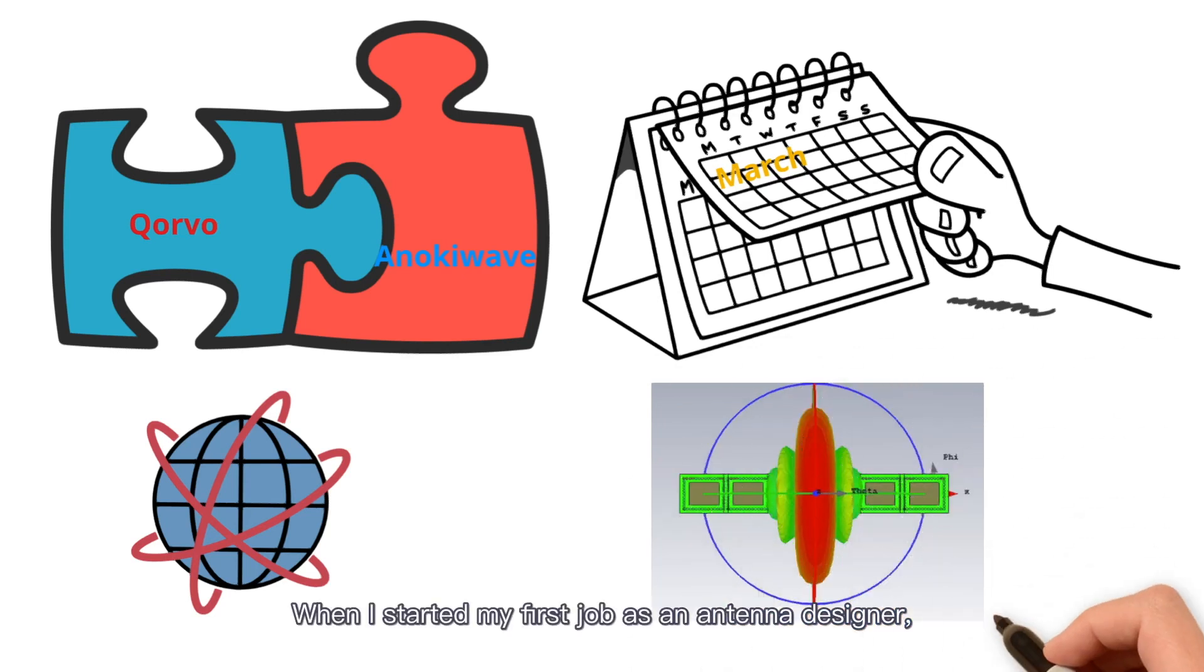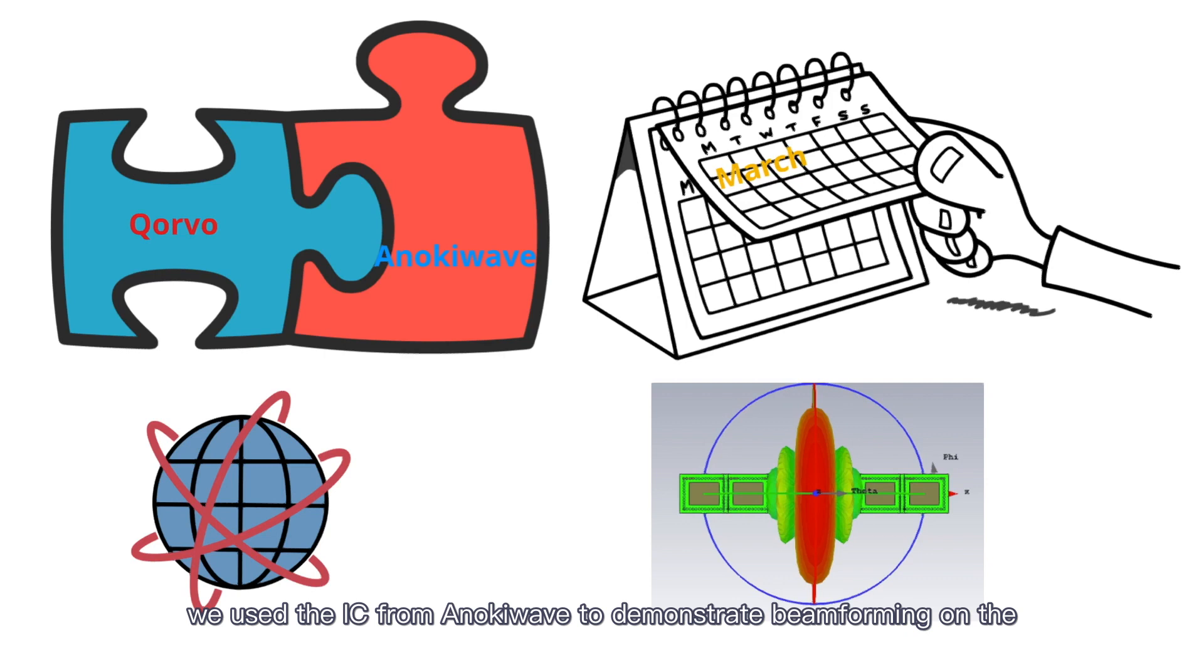When I started my first job as an antenna designer, we used the IC from Anokiwave to demonstrate beamforming on the antenna array consisting of four elements working at Ka-band.